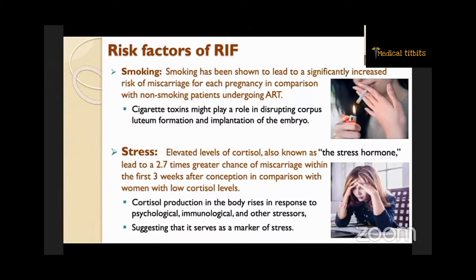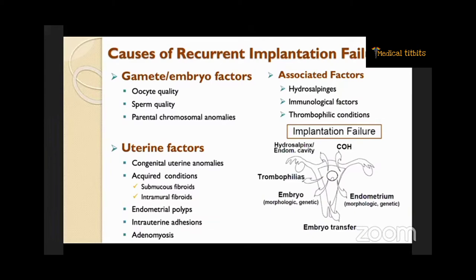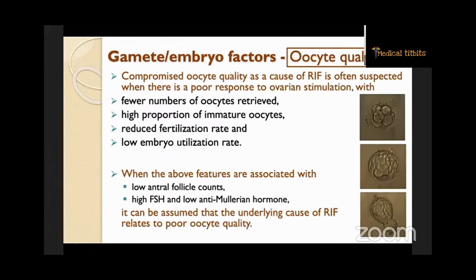What are the causes for recurrent implantation failure? Three categories are important: gamete and embryo factors, uterine factors, and associated factors. In gamete and embryo factors, oocyte quality, sperm quality, or parental chromosomal anomalies can affect implantation. Uterine factors may be congenital or acquired — acquired conditions include submucous fibroids, intramural fibroids, endometrial polyps, intrauterine adhesions, or adenomyosis. Associated factors include hydrosalpinges, immunological factors, and thrombophilic conditions.